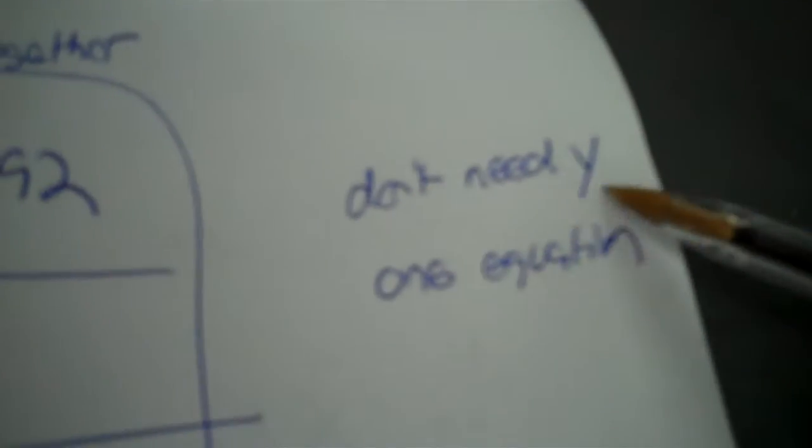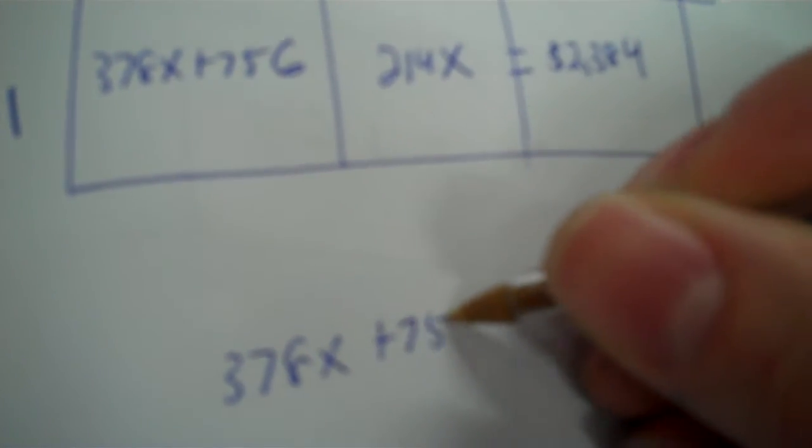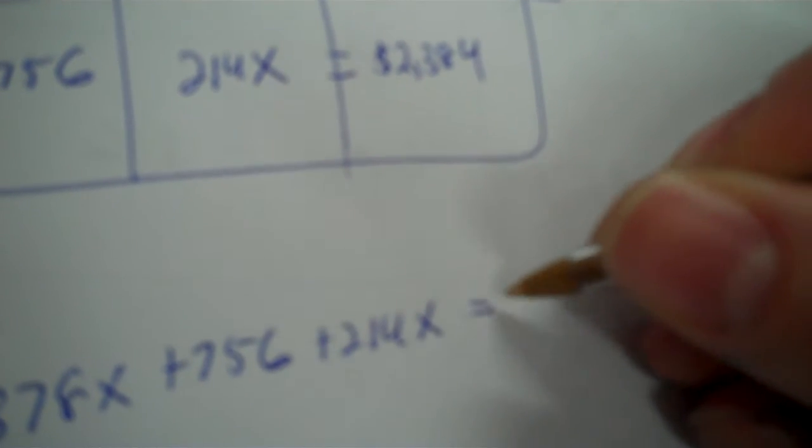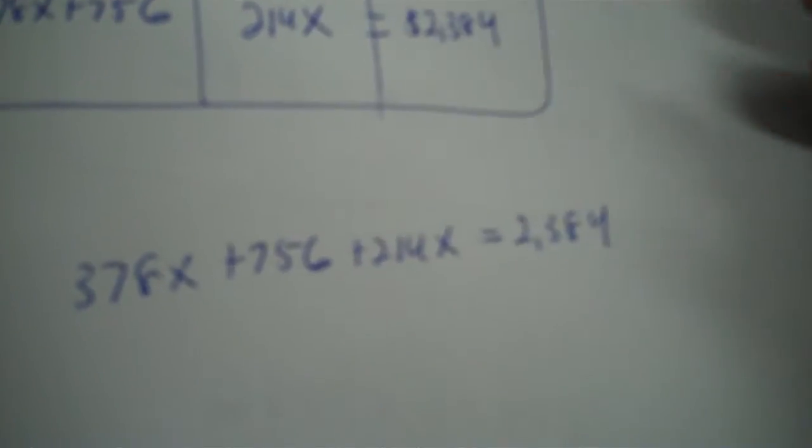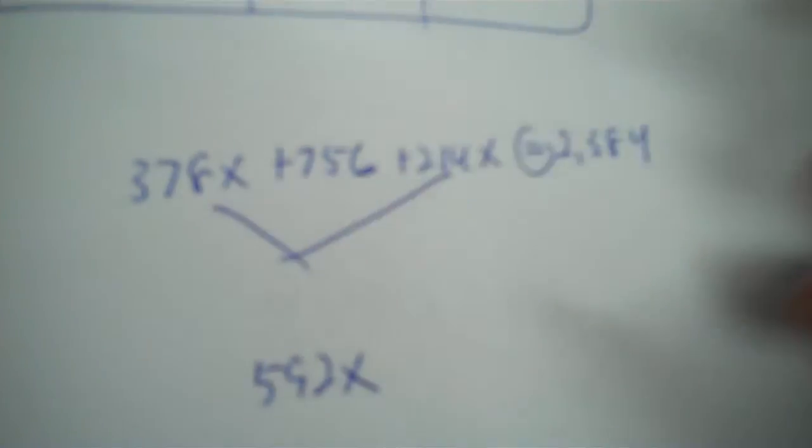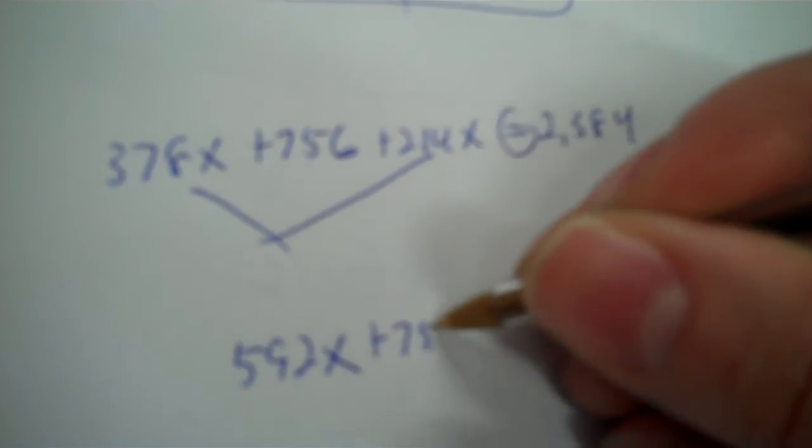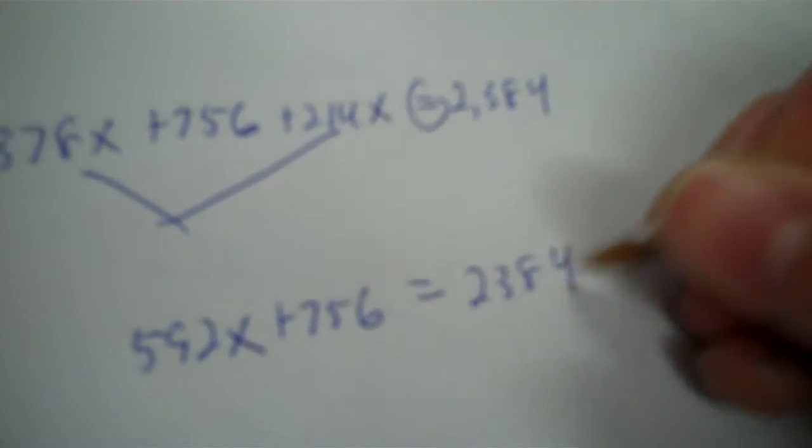So yeah. Remember, you don't need Y, and you only need one equation. So don't make the cross. So you have 378X plus 756 plus 214X equals 2,384. Now you combine your X's, and that's 592X plus 756 equals 2,384.